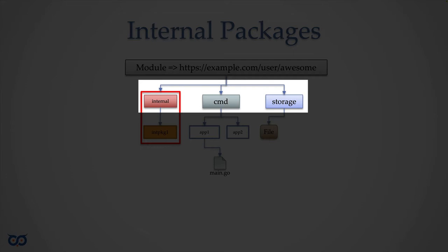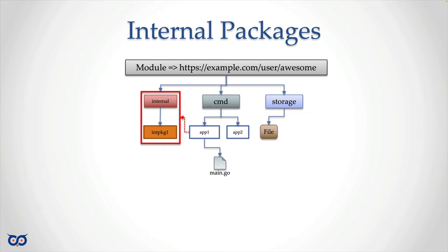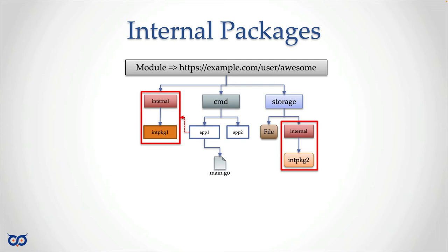The internal directory is at the same level — it shares the same parent — as command. Therefore anything under command can also import anything from it. So app1 could use everything inside internal, same with app2. Now let's say we have a fancy internal storage thing we want to keep as private implementation — our secret sauce. We put it inside storage under its own internal directory. Note that internal doesn't have to be at the top level; it can be at any level. This means that if someone imports our storage package they can only access file, not the thing inside this nested internal.